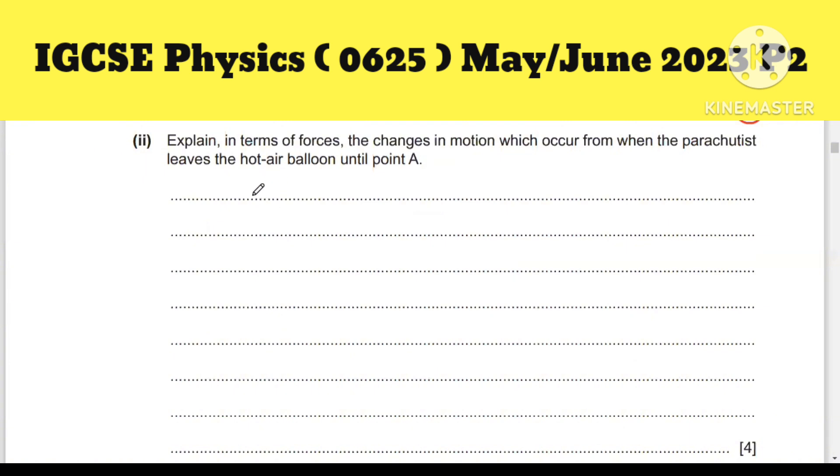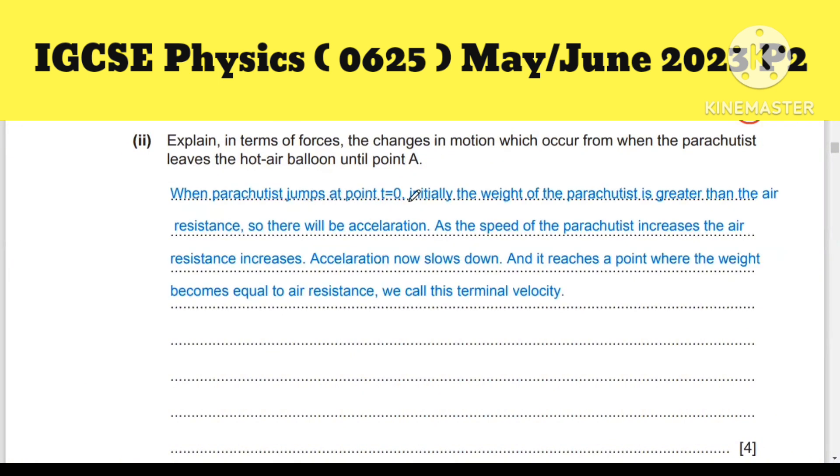Second part: explain in terms of forces the changes in motion which occur from when the parachutist leaves the hot air balloon until point A. When the parachutist jumps at t = 0, initially the weight of the parachutist is greater than the air resistance, so there will be acceleration. As the speed increases, air resistance also increases. Acceleration now slows down and reaches a point where weight becomes equal to air resistance. This is called terminal velocity. You will get four marks.